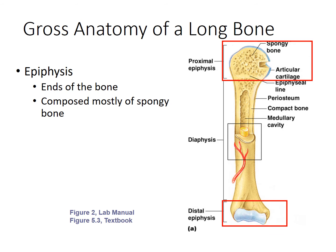The ends of the bone are regions which we call the epiphyses. The epiphyses are composed mainly of spongy bone. Notice that at the diaphysis we had mainly compact bone surrounding the medullary cavity, while in the epiphyses we still have that outer layer of compact bone but much more spongy bone filling the interior.